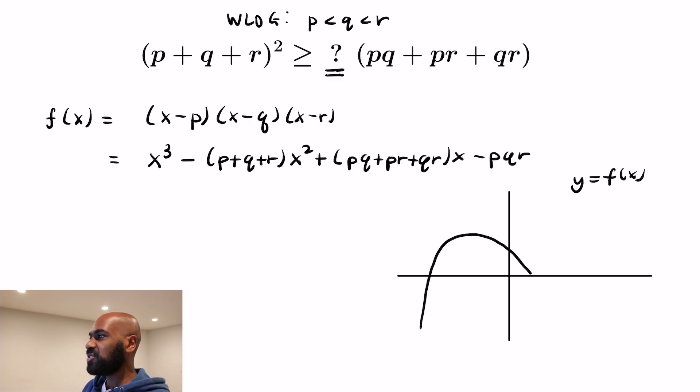It has three roots, and as x goes to negative infinity goes to negative infinity, as x goes to infinity goes to infinity. So the graph has to look something like this, where P, Q, and R are the actual roots. And that tells us that the function itself has to have two critical points,